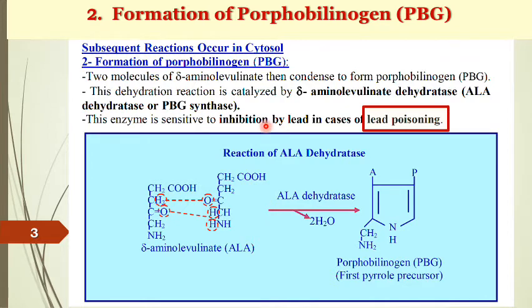ALA dehydratase is inhibited by lead. This is very important because lead is a toxic metal that inhibits heme synthesis in the bone marrow. If anyone is exposed to high concentrations of lead, it inhibits both the second enzyme (ALA dehydratase) and the last reaction. Lead is a powerful inhibitor of heme synthesis.